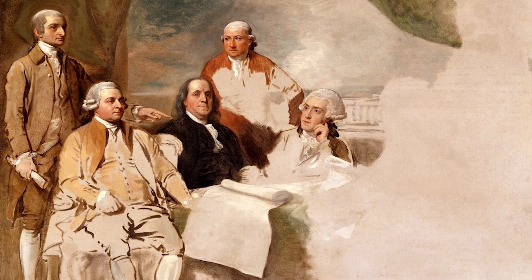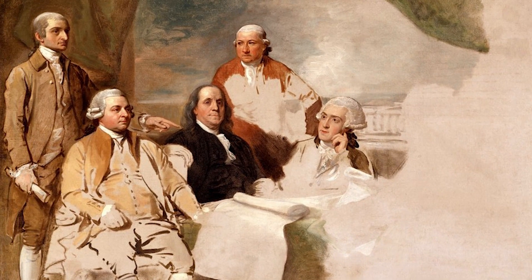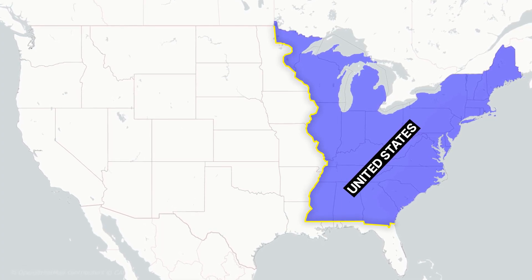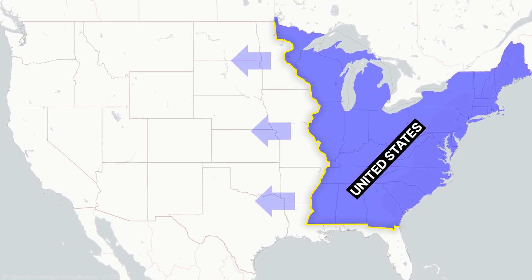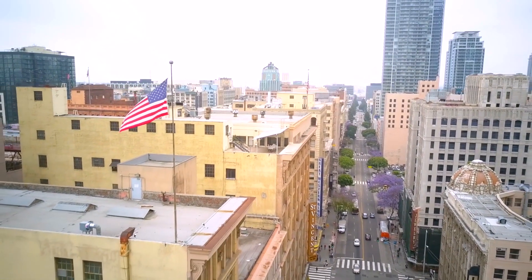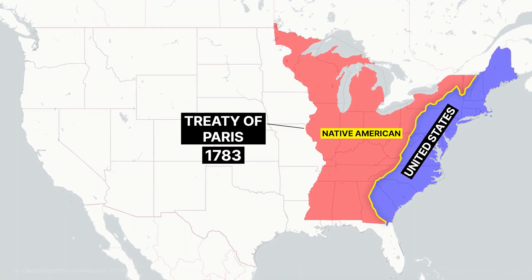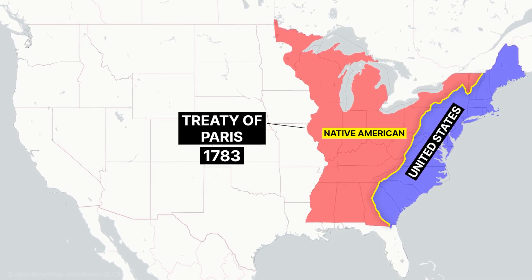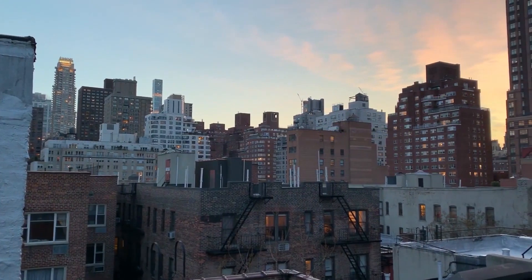On September 3, 1783, Britain officially recognized American independence and ended the American Revolutionary War. Under the Treaty of Paris, the British Crown ceded most of its territory east of the Mississippi River to the United States, which more than doubled the size of the United States and paved the way for westward expansion. The United States acquired from Great Britain valuable lands previously reserved for the natives, originally designated in the Royal Proclamation of 1763, and regardless of the major treaties previously concluded with the native populations, they were handed over to the United States.